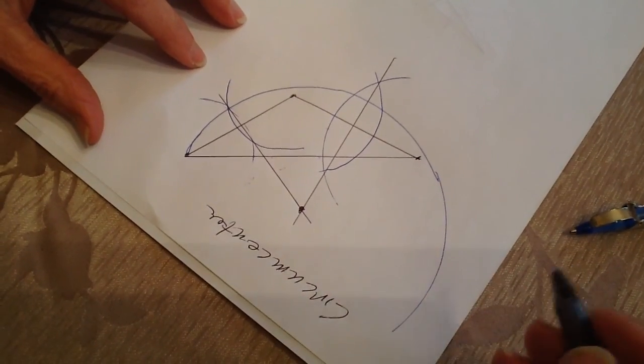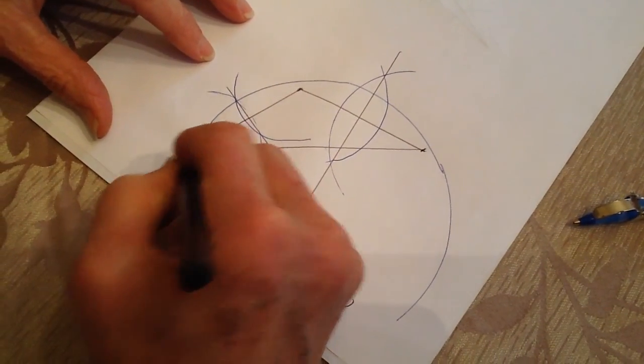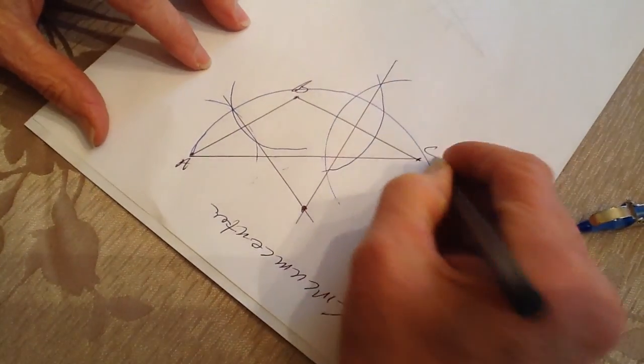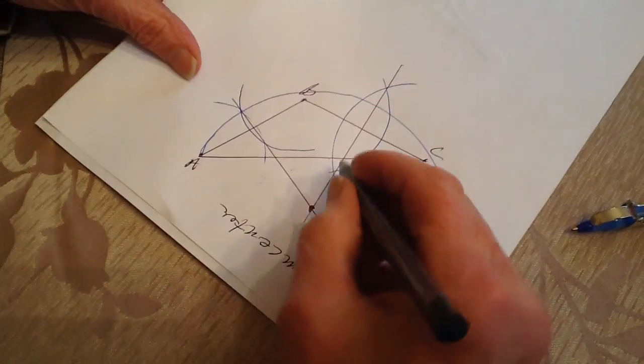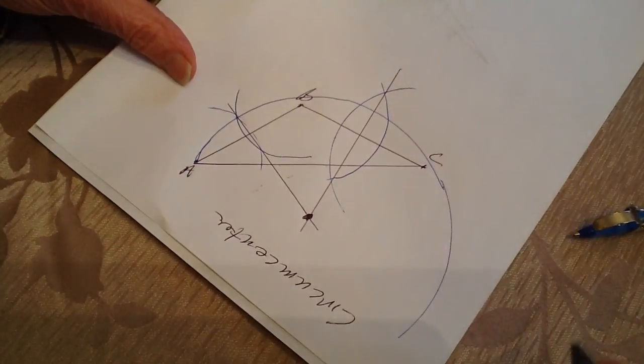And this is useful, for instance, if these were three towns, A, B, and C, and I wanted to put a library equal distance from each one, then this would be the perfect place to do it.